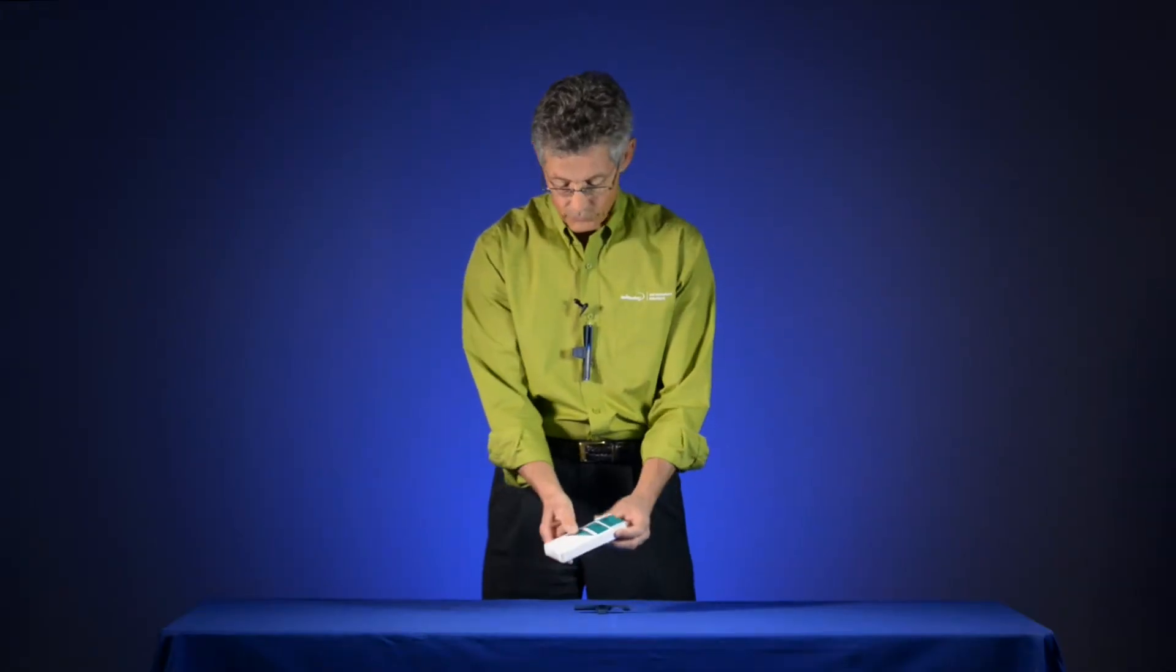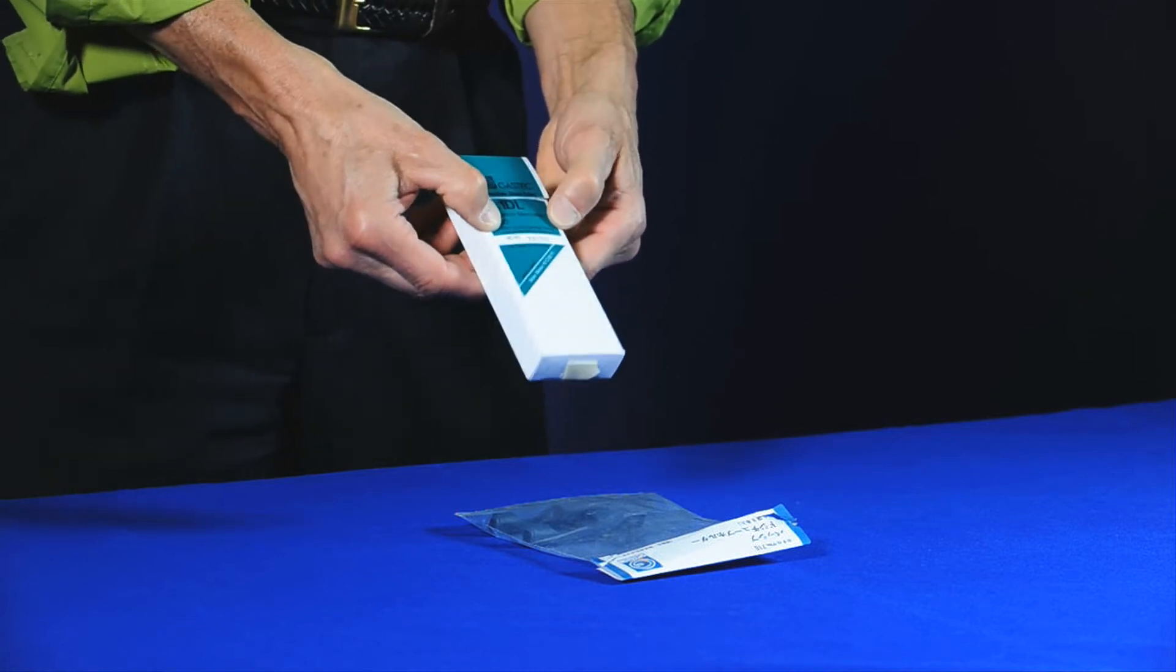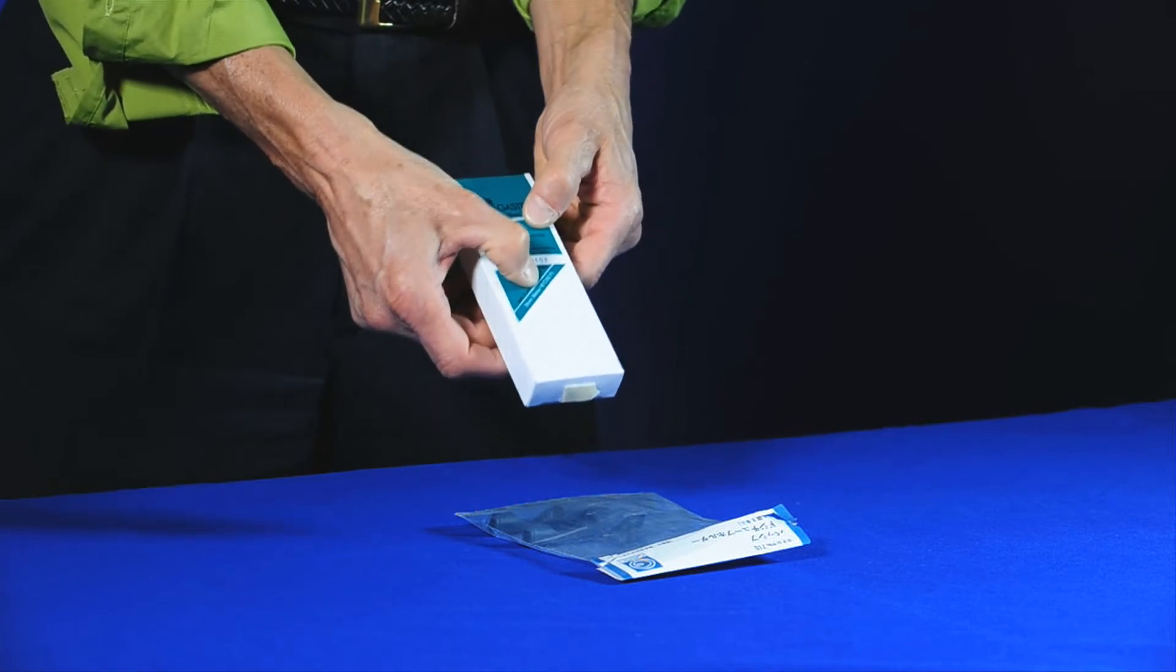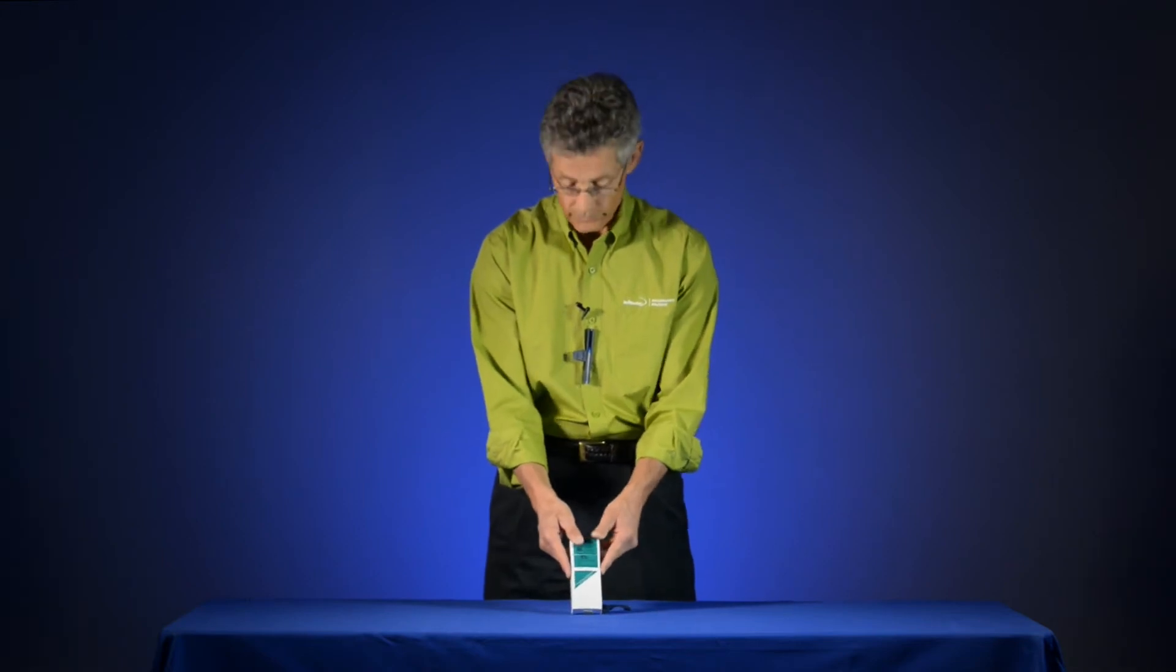So when you get a box of DOSI tubes, you're going to notice a couple of things. There's a QC number on the front, which refers to the lot number that is manufactured. They'll give you the range. It says store below 10 degrees Celsius because these tubes like to be kept cool and dark.